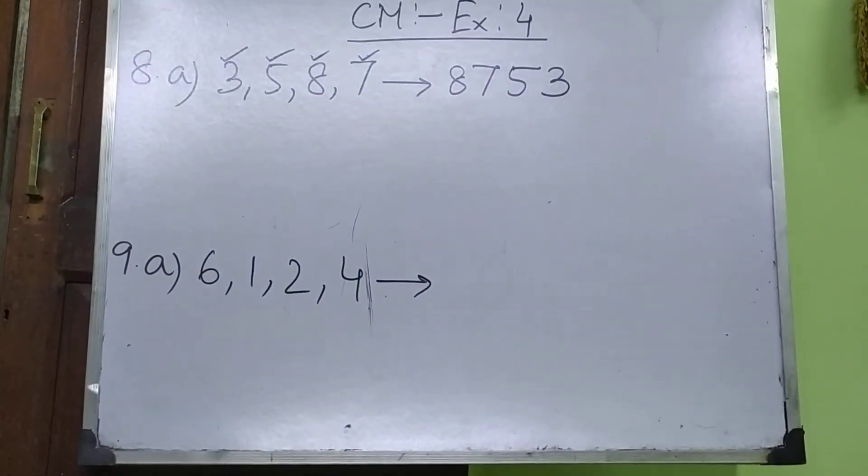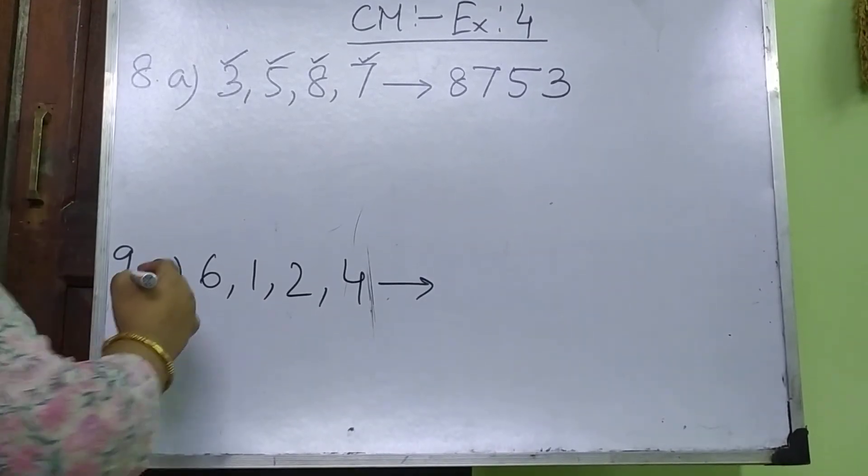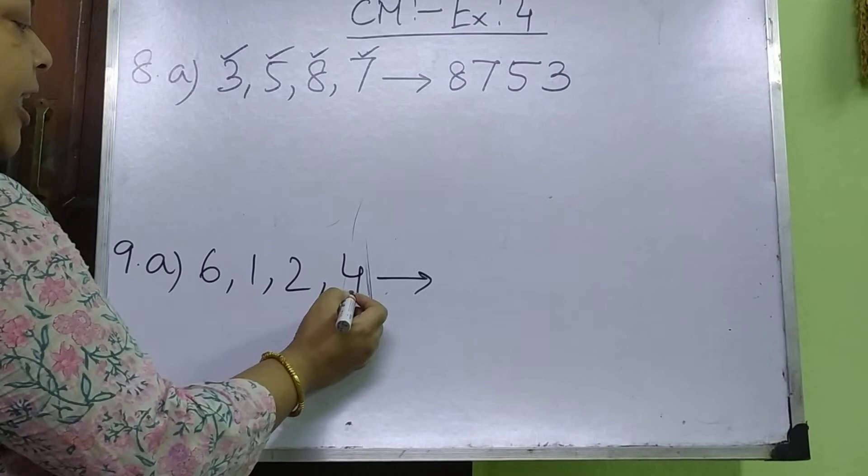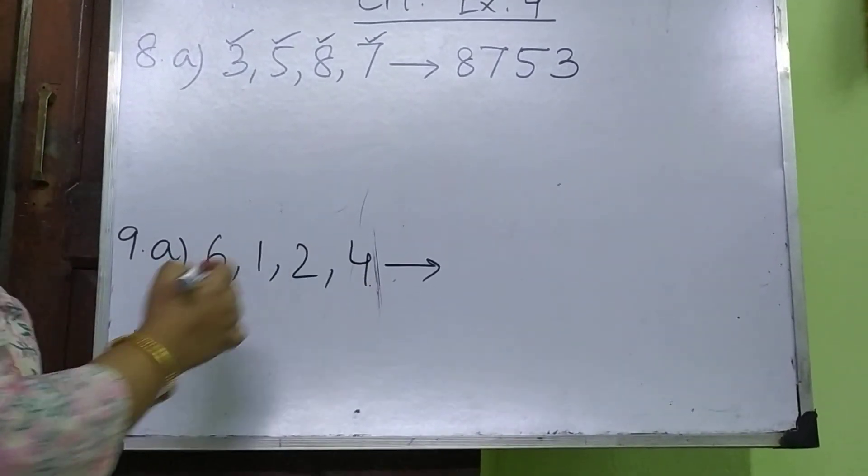So, like this we will do the rest of the sum. Now, 9a. We have to write the smallest digit of these 4 digits.